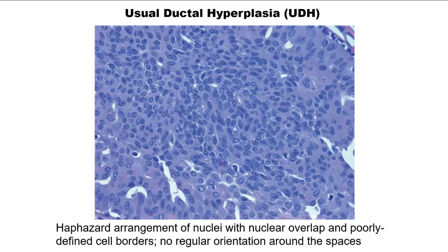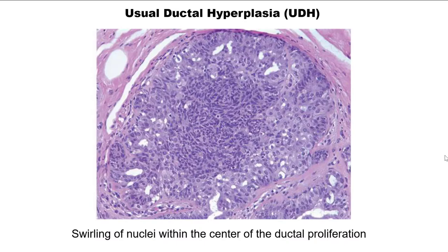Here is a closer view of usual ductal hyperplasia. Notice the disorderly arrangement of nuclei as they fill the lumen — there's nuclear overlap, poorly defined cell borders, and no regular orientation around the spaces. The spaces are slit-like and not round and uniform. Another example shows swirling of nuclei within the center of the ductal proliferation.